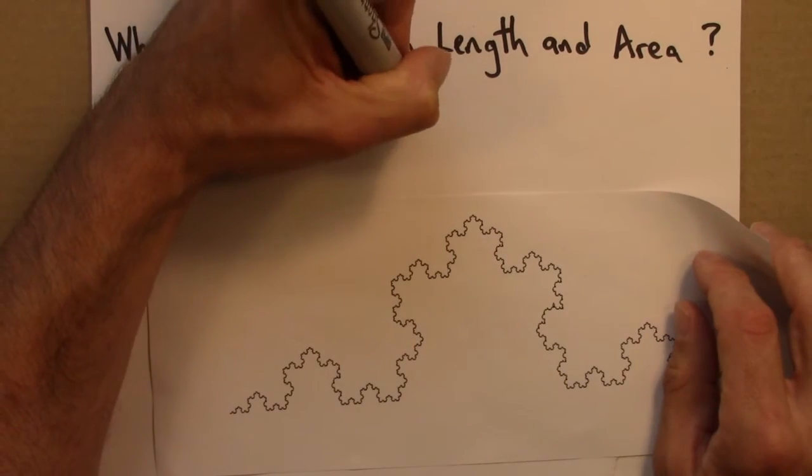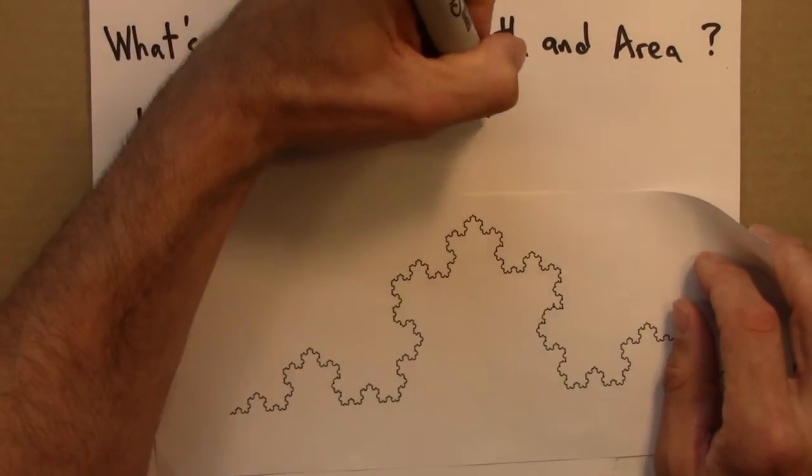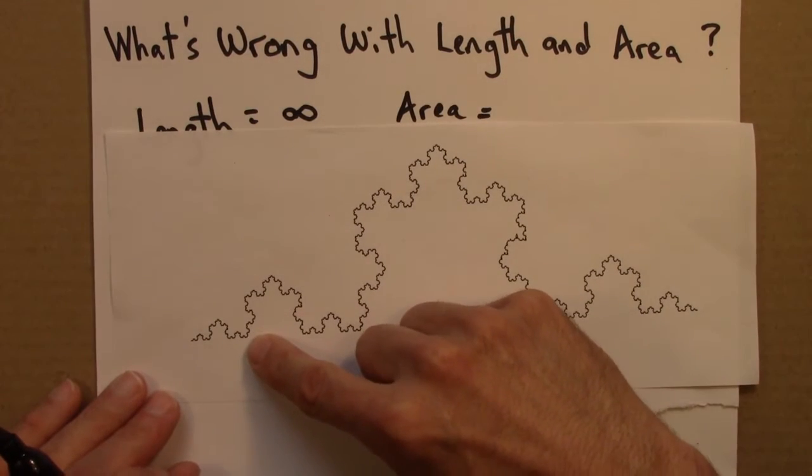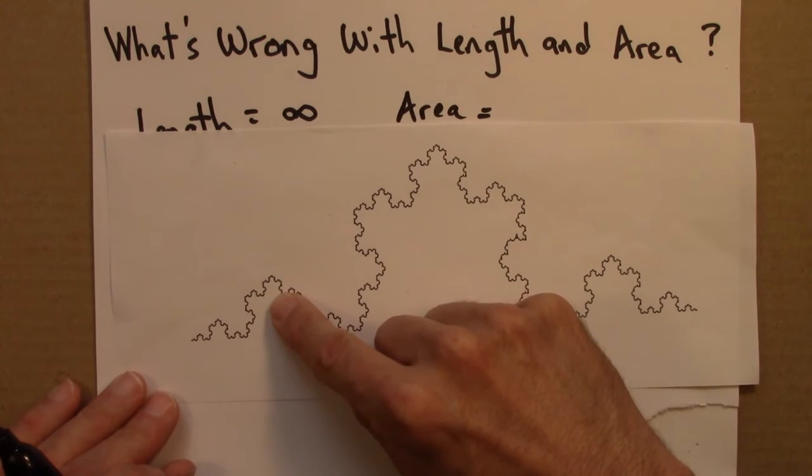Similarly, we could ask, what about the area? What's the area of this? Well, the area is going to be zero, because this is made up of lines, and lines are one-dimensional.